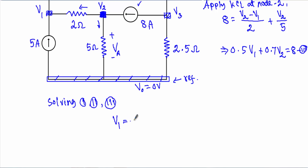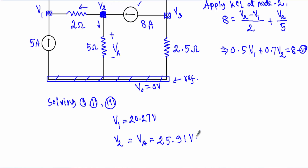Now solving equations 1, 2, and 3, we get: V1 equals 20.27, V2 equals 25.91, and V3 equals minus 0.45. That's it, thank you.